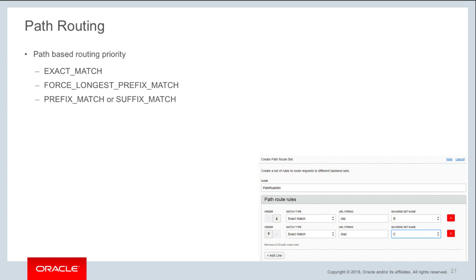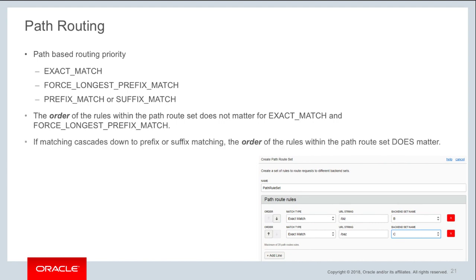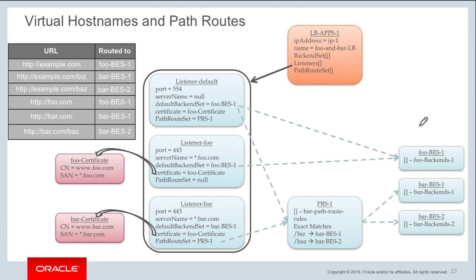Path route rules apply only to HTTP and HTTPS — not TCP requests. You can specify up to 20 path routes within a single route set, and you can only specify a single path route set per listener. Regarding priority: exact match is first, then force longest prefix match, then prefix match or suffix match. The order of rules within the path route set does not matter for exact match and force longest prefix match, but order does matter when matching cascades down to prefix or suffix matching.